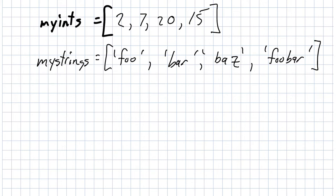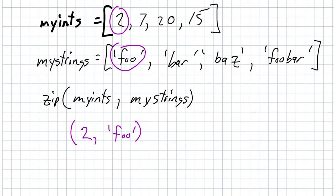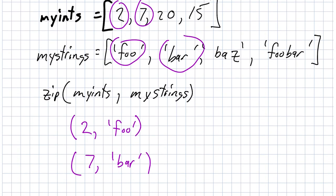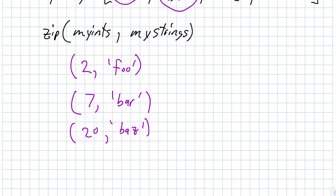If I then say zip of my ints and my strings, zip will produce an iterator. The very first thing emitted from this iterator is going to be composed of the two first items from these two lists. So the first tuple produced will be 2 and foo, then the next will be 7 and bar, and on down the line — so 20 and baz, and 15 and foobar.